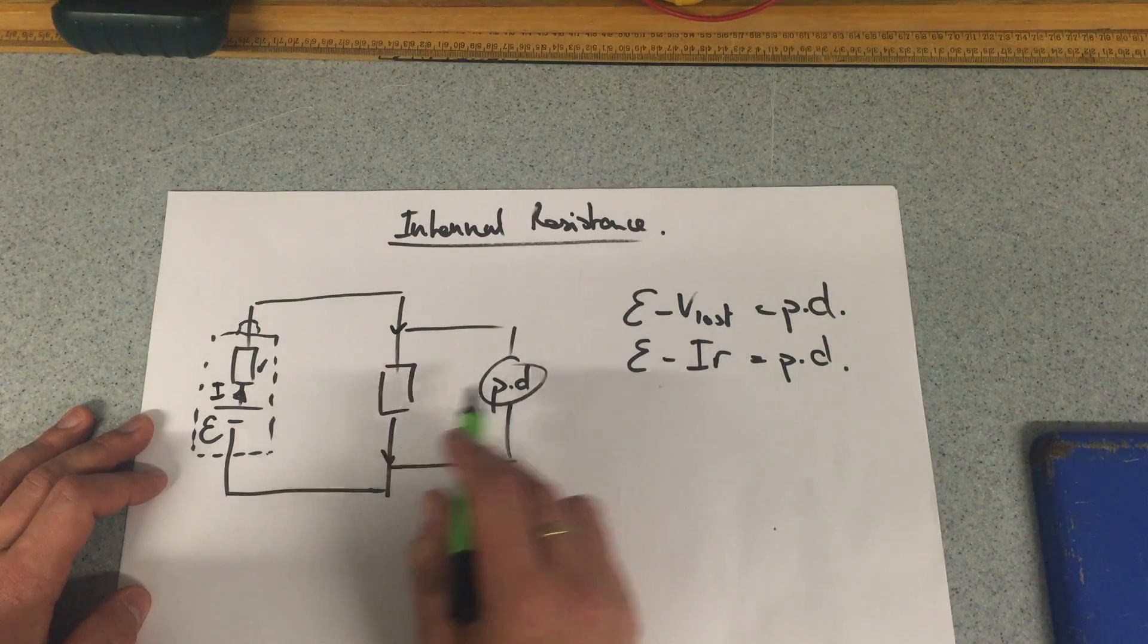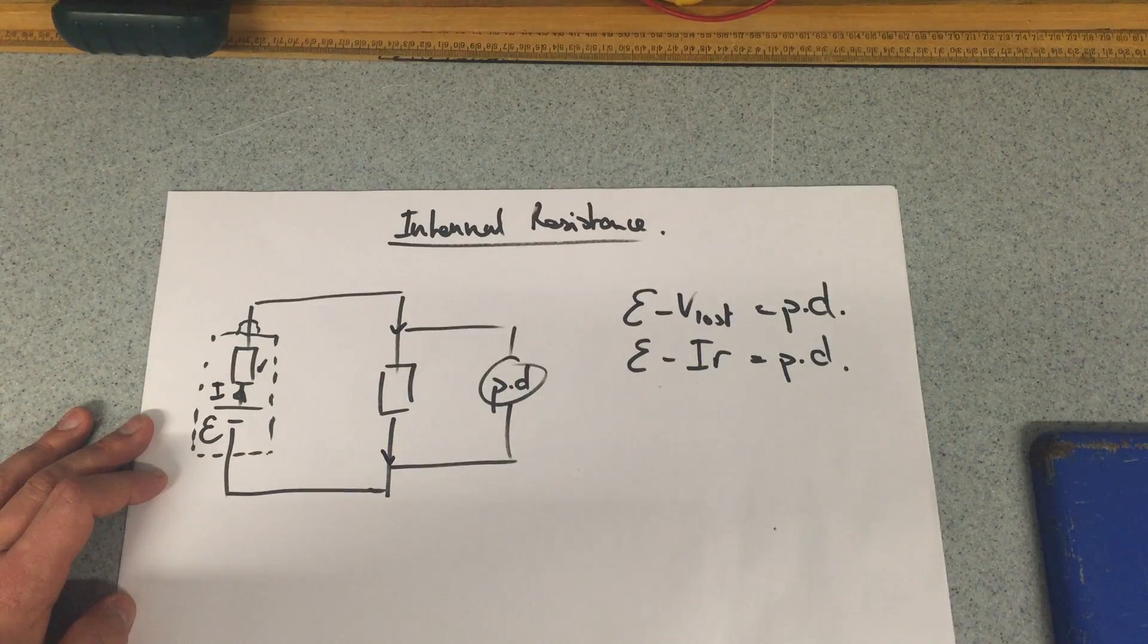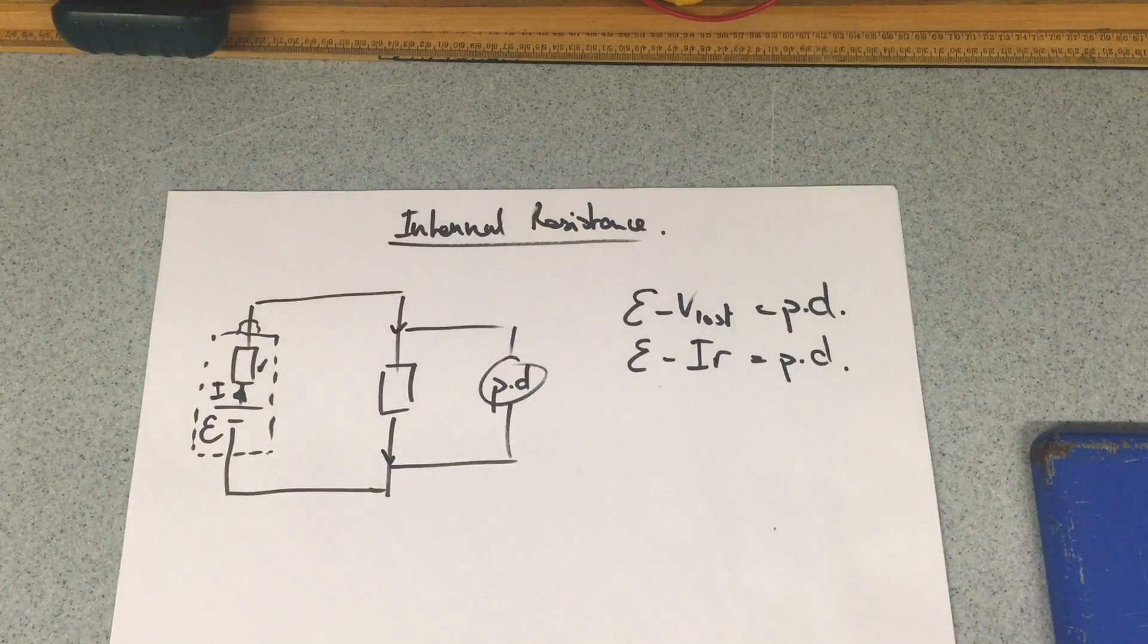all the way in a series circuit, then the PD across here will decrease. So we want to work out what that looks like and the quantity by which it decreases.